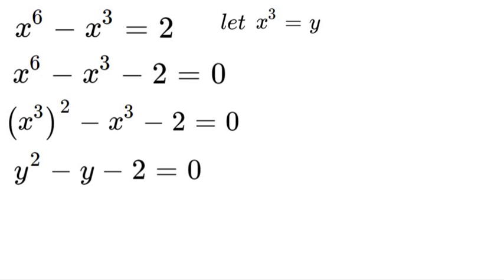And negative 2 plus 1 is negative 1. So we would have y minus 2 times y plus 1 is equal to 0.